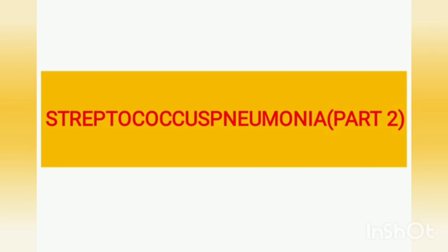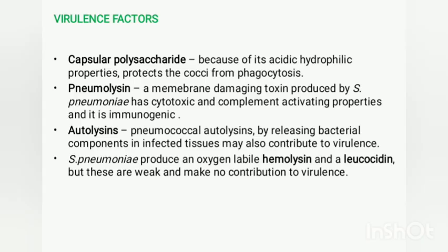Welcome. In this video we are going to discuss the remaining features of Streptococcus pneumoniae. First, we will discuss virulence factors. The virulence of Streptococcus pneumoniae depends upon three main factors: capsular polysaccharide, pneumolysin, and autolysin.